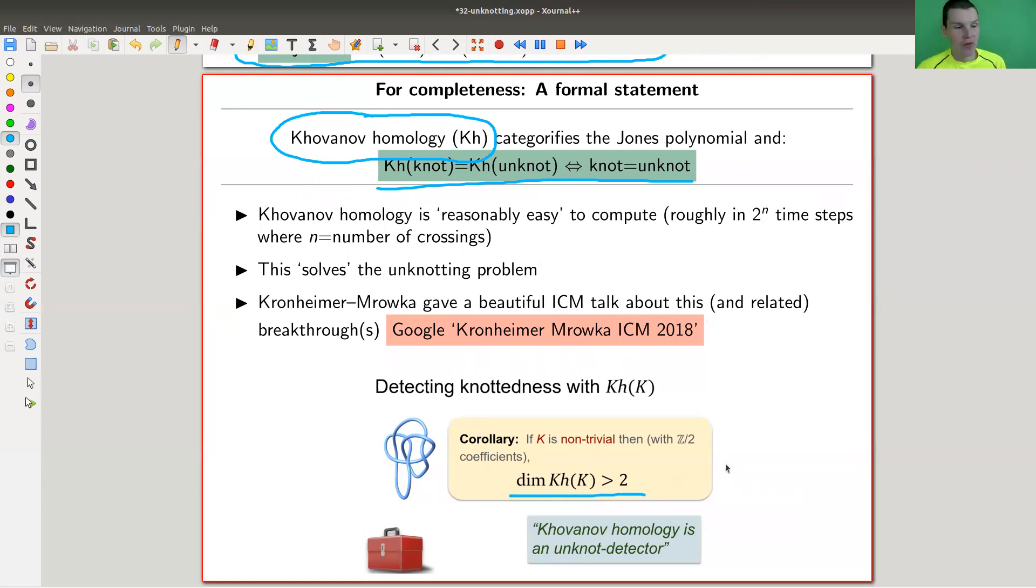So I just compute it. Just compute it, and I'm done. Really simple. Khovanov homology is an unknot detector.